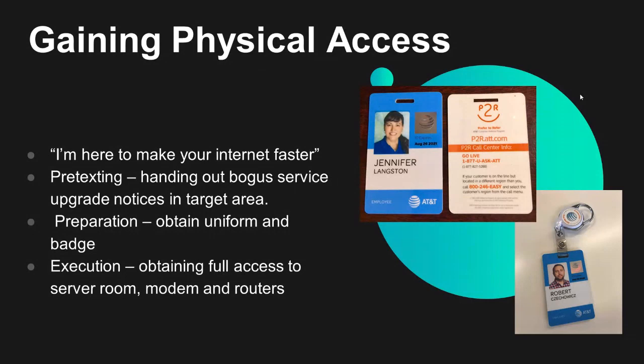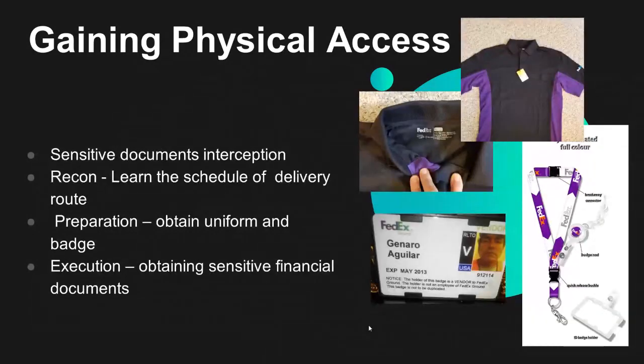FedEx: this was a sensitive document interception. Many businesses send sensitive documents via FedEx Express envelopes. We learned the FedEx Express delivery schedule, obtained a uniform for $6 or $7, and made a badge — with front and back details found online. The actual badge holder is sold for about $10. For execution, we obtained financial documents handed right to us because they were expecting a FedEx pickup that day — we got the documents without even stepping foot in the actual facility.